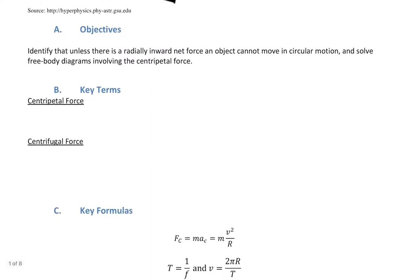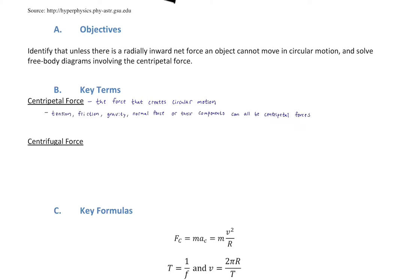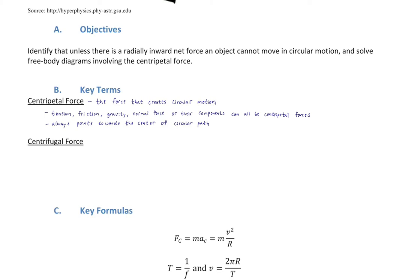First, we have centripetal force — the force that creates circular motion and centripetal acceleration. Tension, friction, gravity, normal force, and their components and combinations can all be centripetal forces. There's no centripetal force on its own; it has to be created by some other force. It always points to the center of the circle — centripetal means center-seeking.